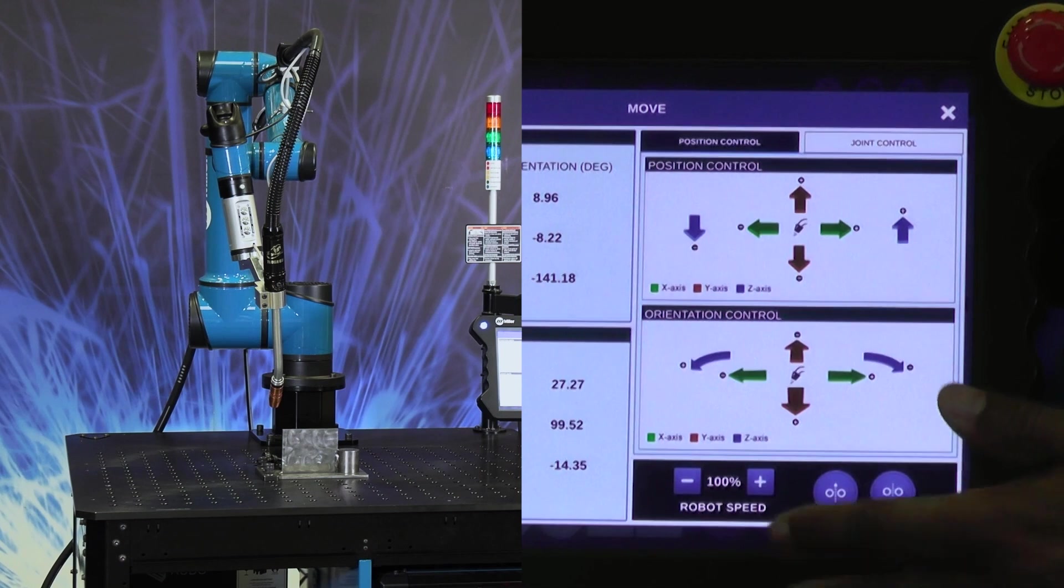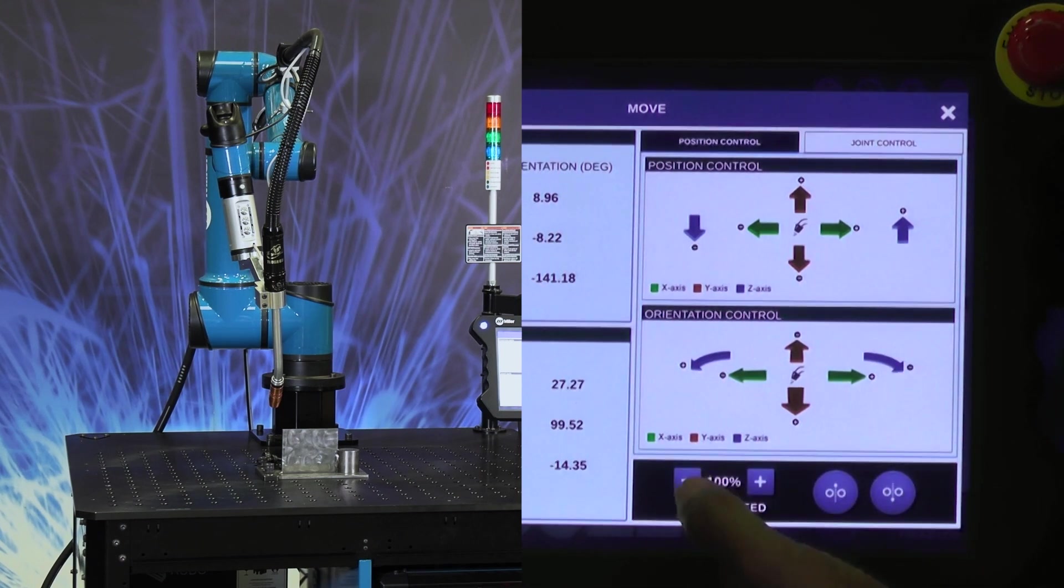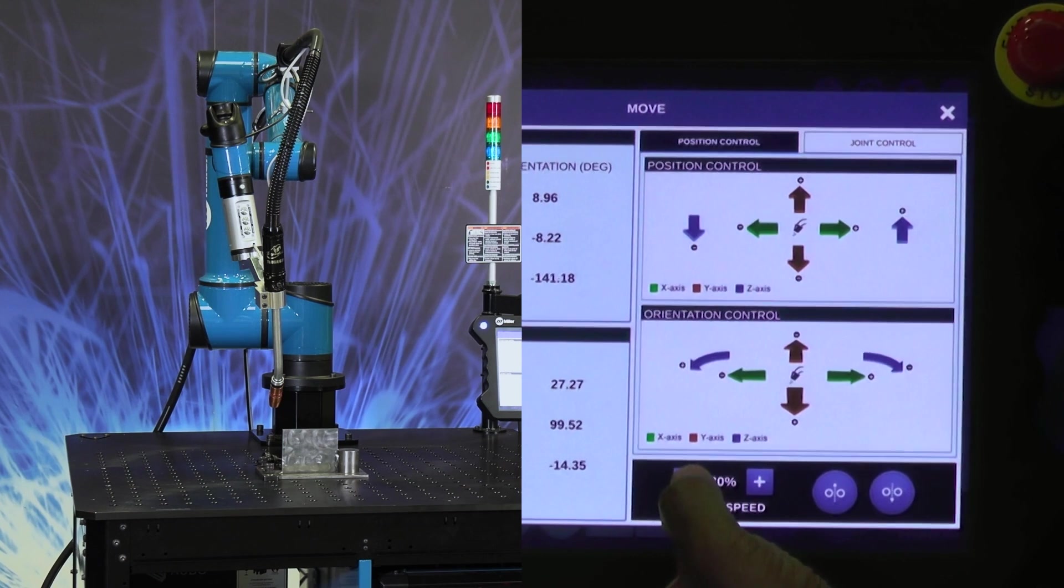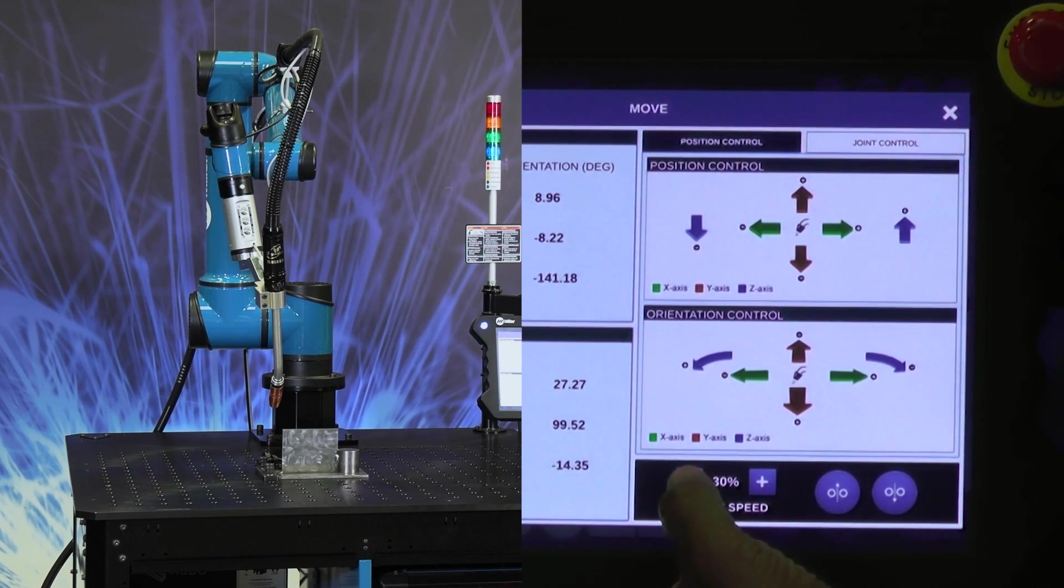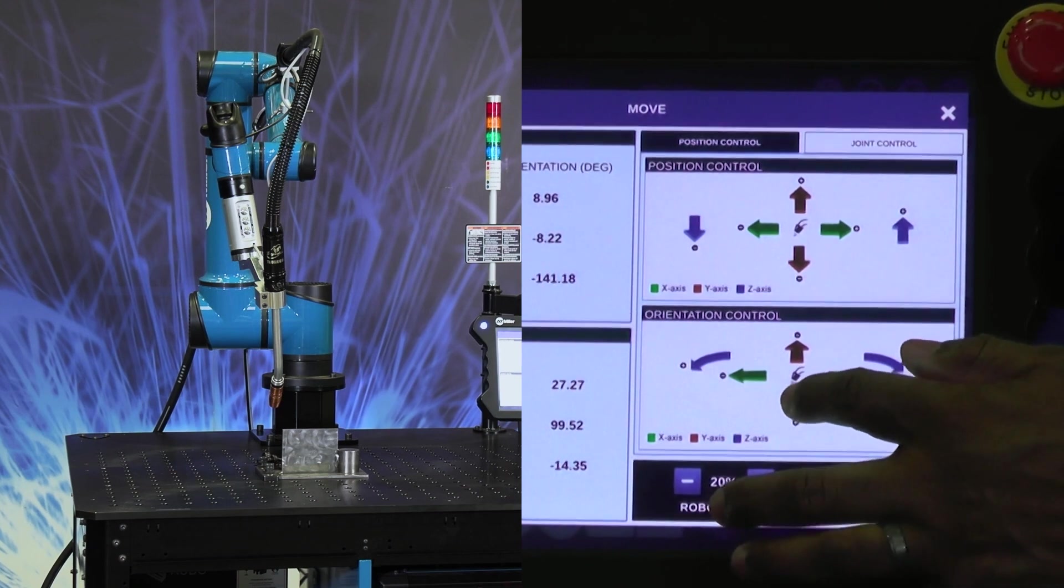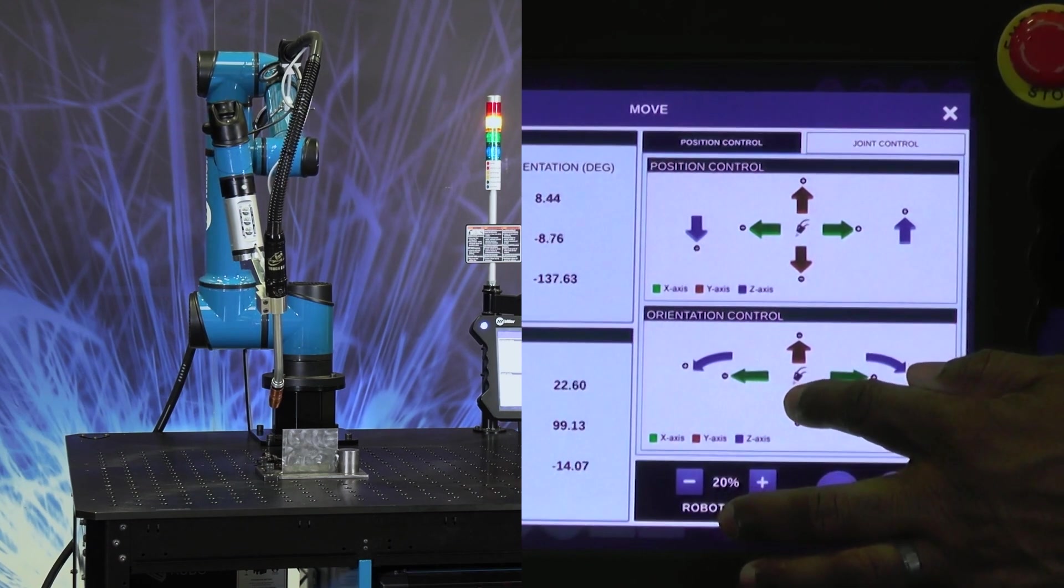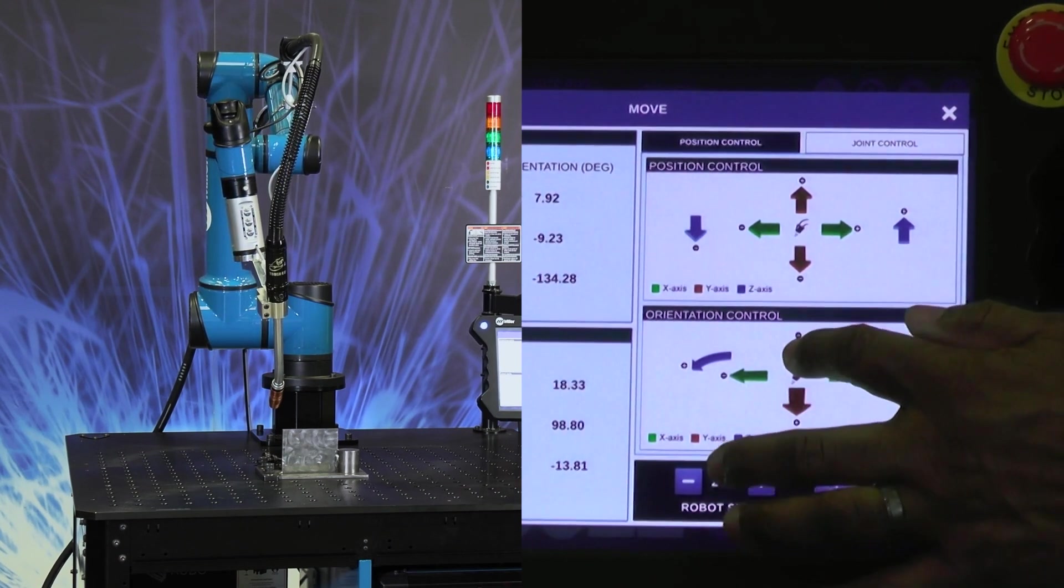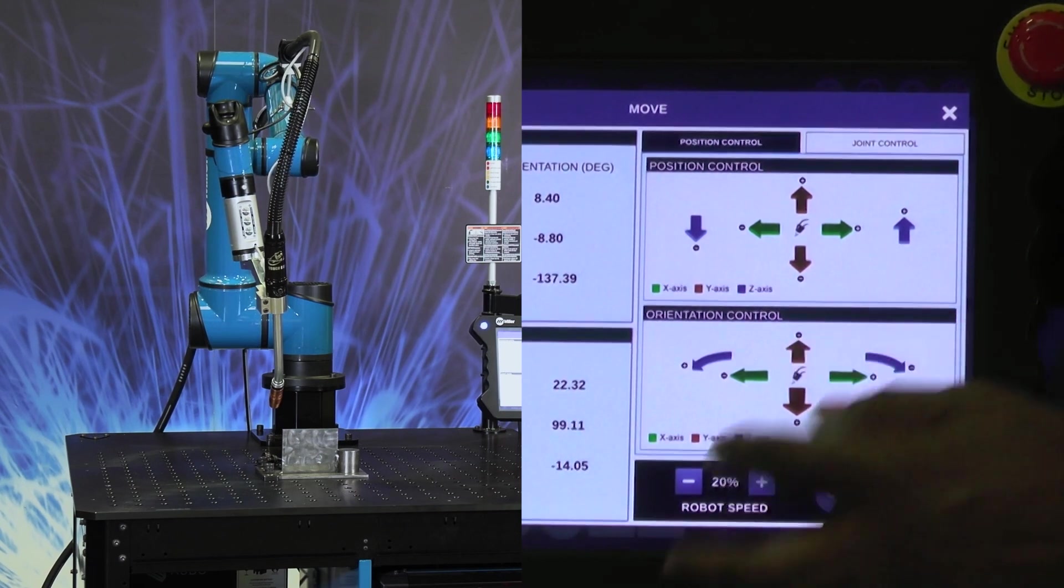If you're using the move screen, this is where our robot speed control is. We can take this down to, say, 20%, and you can move it.